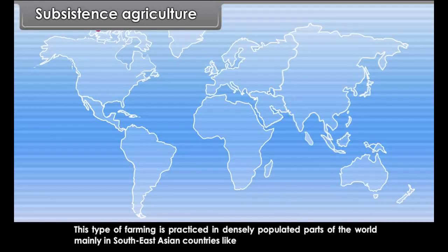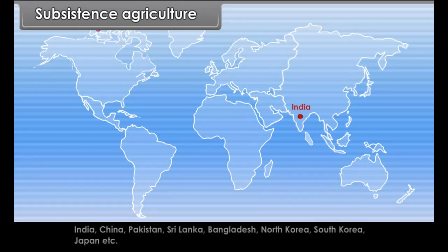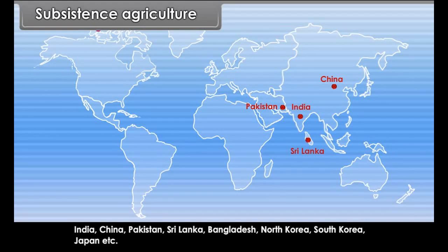The land is cultivated intensively so as to grow two or three crops a year. This type of farming is practiced in densely populated parts of the world, mainly in Southeast Asian countries like India, China, Pakistan, Sri Lanka, Bangladesh, North Korea, South Korea, Japan, etc.